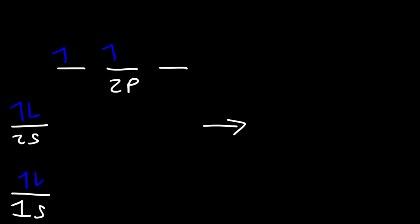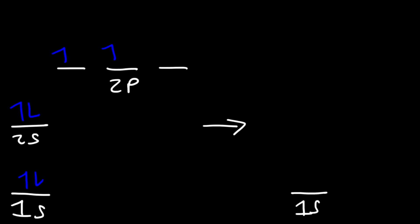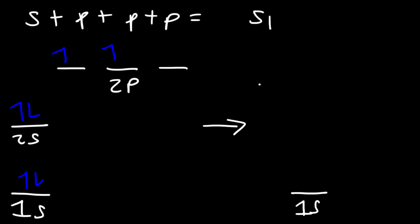During hybridization, the 2s orbital and the three 2p orbitals mix together to form sp3 hybrid orbitals. The 1s level stays the same. We're mixing four atomic orbitals, so we get four hybrid orbitals, and they will be degenerate orbitals of the same energy. Mixing one s and three p orbitals gives us four sp3 orbitals.